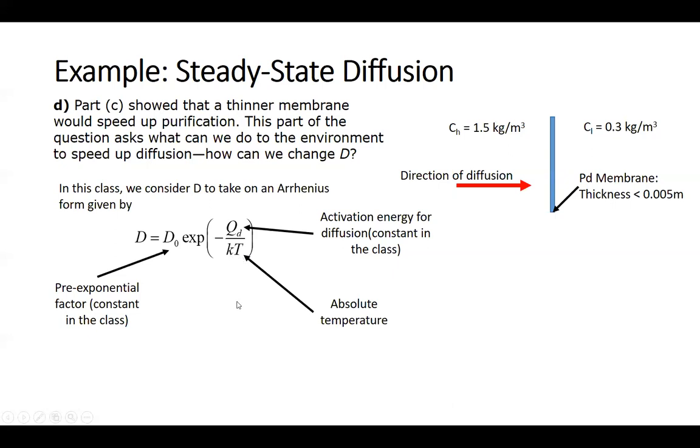And the only other variable is T, which is absolute temperature. k obviously is the Boltzmann constant and it doesn't change. So of the three things, D naught, Q_d, and T, only one of those is variable: temperature. That's the only variable that we can actually alter in the environment to change the diffusive process.